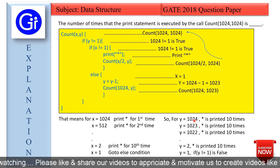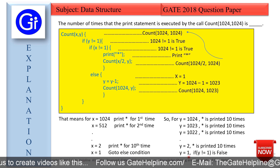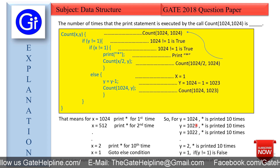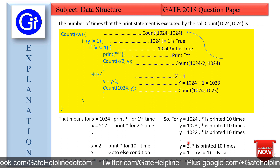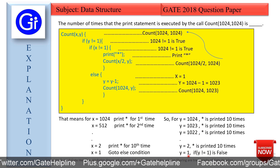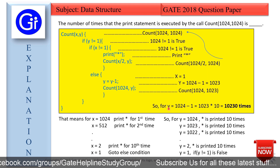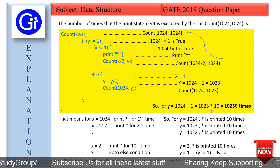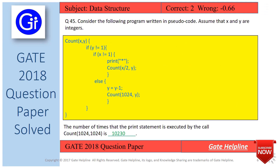We execute the print statement 10 times for each value of y, excluding y = 1. That gives us y values from 1024 down to 2, which is 1024 - 1 = 1023 values. So the total count is 1023 × 10 = 10230. The answer to this question is 10230 — the number of times the print statement is executed by the call count(1024, 1024).